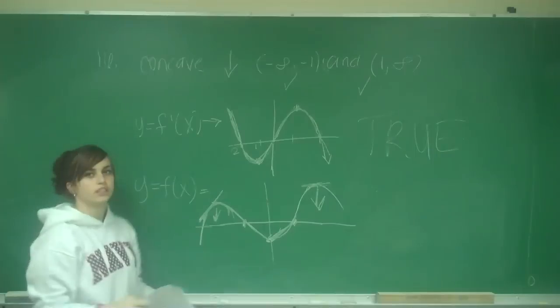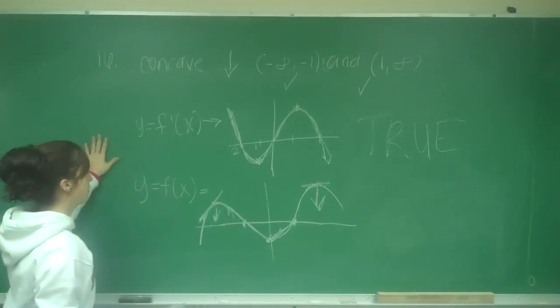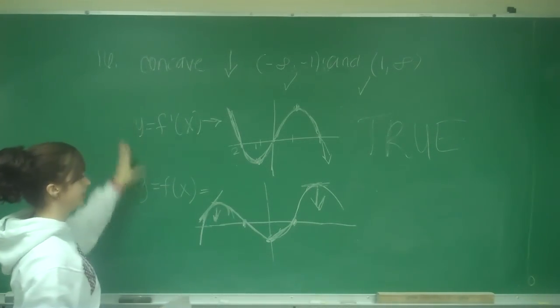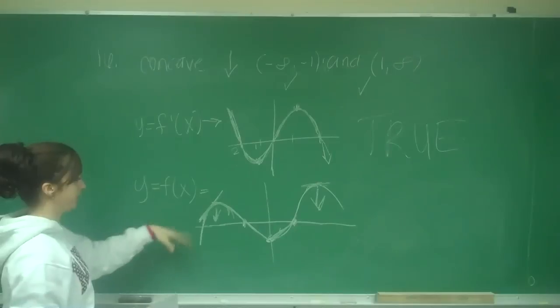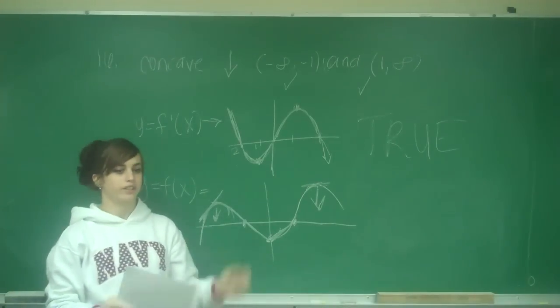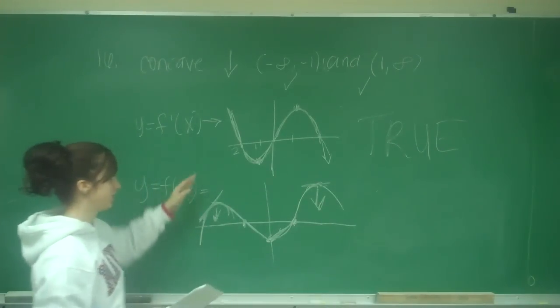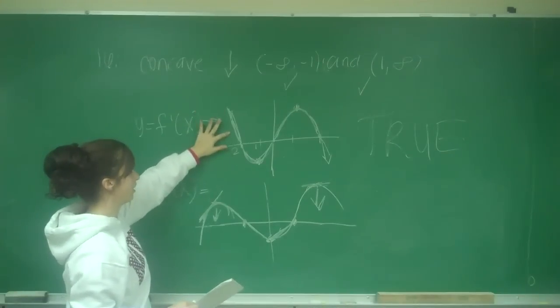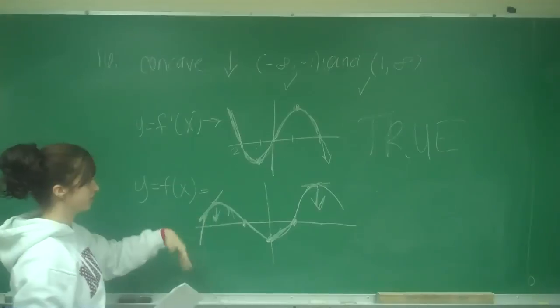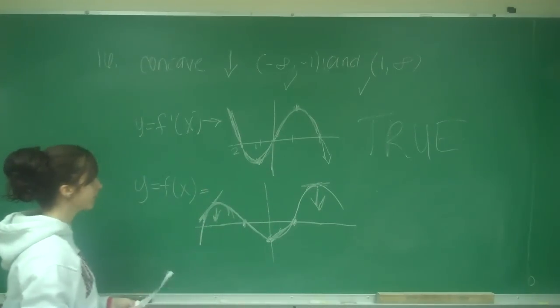The hardest part of these bonus questions is coming up with your graphs. They give you the graph of the derivative, and you have to graph the original. From there, you can answer all the questions. Just remember: if the derivative is above the x-axis, positive slope; below is negative slope.